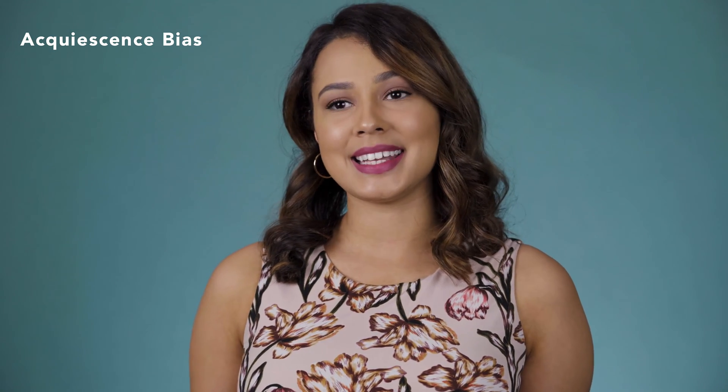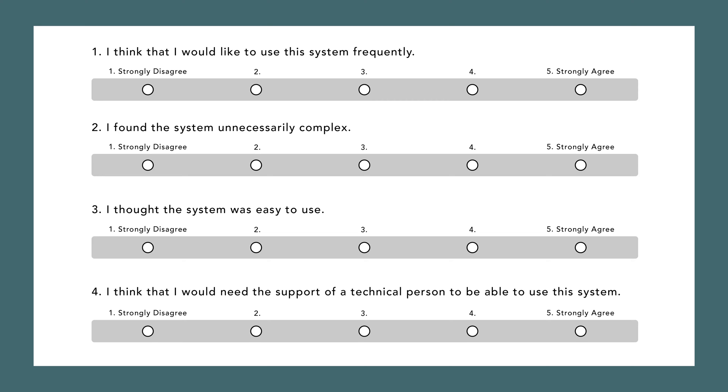Let's talk acquiescence bias. This is our tendency to check agree as we run through a list of survey questions — basically a tendency to agree or say yes. Let's imagine we're running a system usability scale questionnaire using a five-point scale where one is strongly disagree and five is strongly agree. Generally speaking, respondents will have a tendency to check agree or strongly agree as they go through the questionnaire, which would result in positively skewed results.